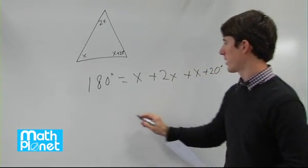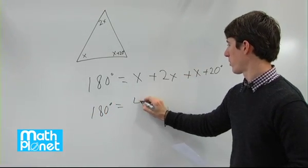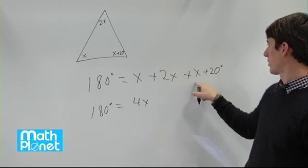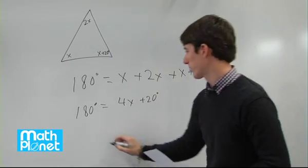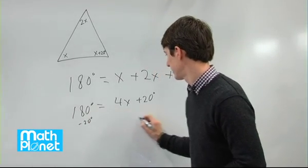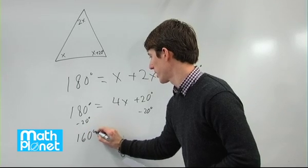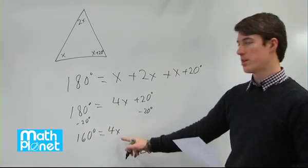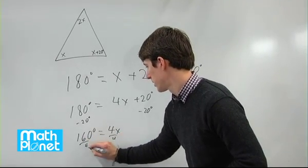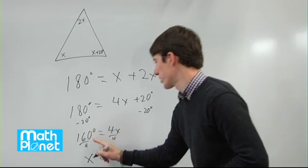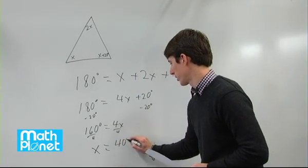So we can simplify to 4x plus 20. Subtract 20 from both sides. We get 160 degrees equals 4x. Then we can just solve for x by dividing both sides by 4. So we get x is equal to 160 divided by 4, which gives us 40 degrees.